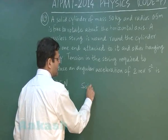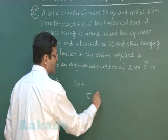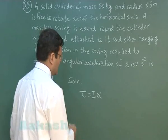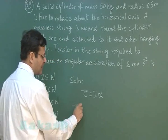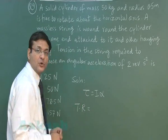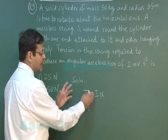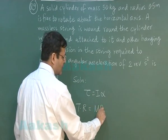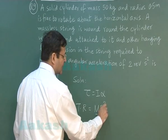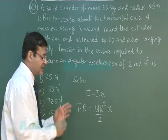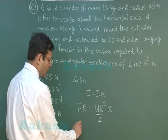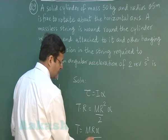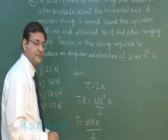We use the basic equation: torque equals I alpha. The tension multiplied by radius equals the torque, and the moment of inertia of the cylinder is mr squared by 2. So the tension required is T = mr alpha by 2.